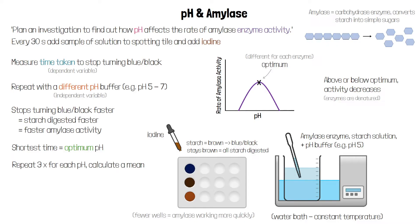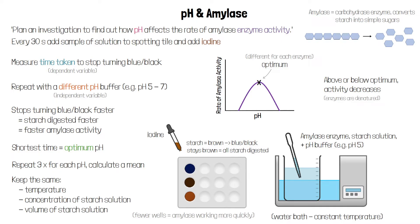To make sure our results are reliable, it's a good idea to repeat at least three times for each pH and to calculate a mean. We need to make sure the temperature stays the same throughout the experiment using the water bath, and we need to make sure the concentration and volume of starch solution stay the same as well. These are our control variables.